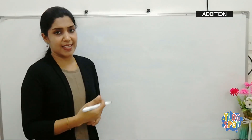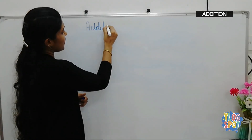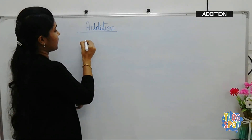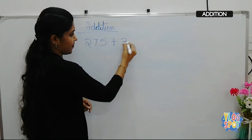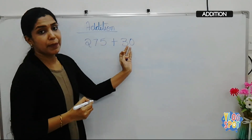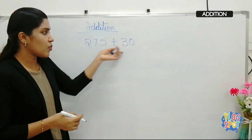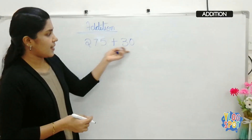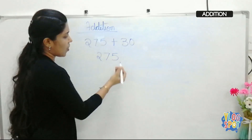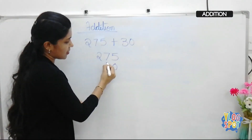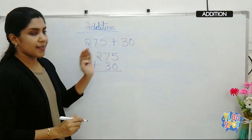So we have a number: 275 plus 30. One is a three-digit number and the other is a two-digit number. If we write this vertically, we have to keep it horizontally aligned — always keep the ones place under ones, tens under tens, hundreds under hundreds. Think of 30 as 030.